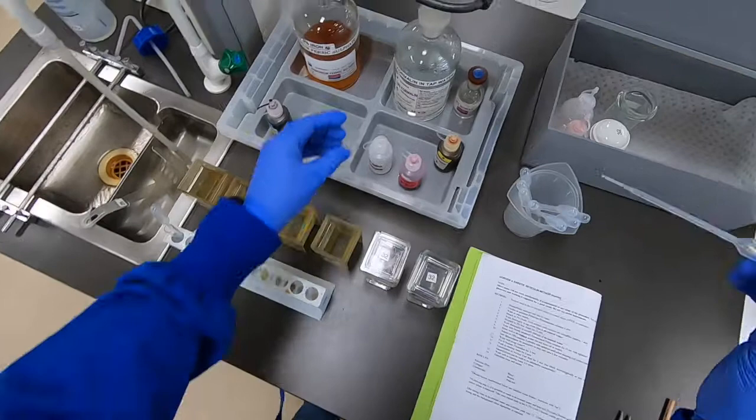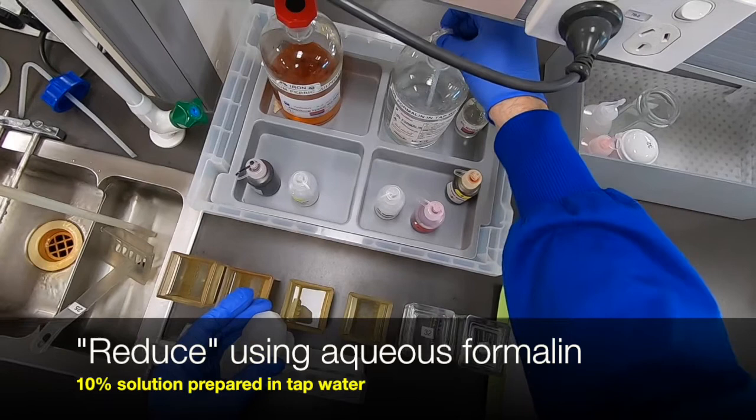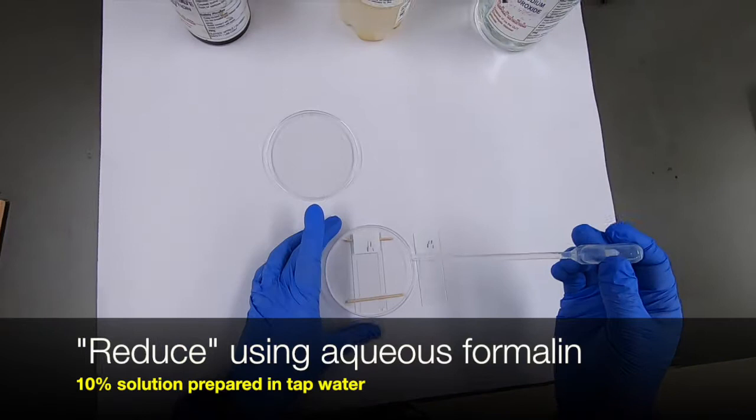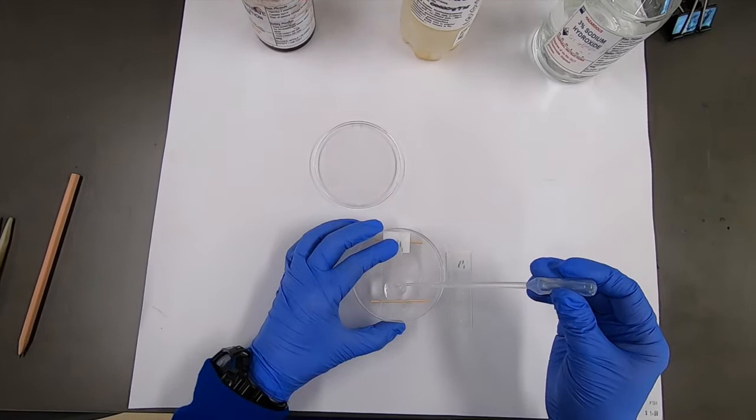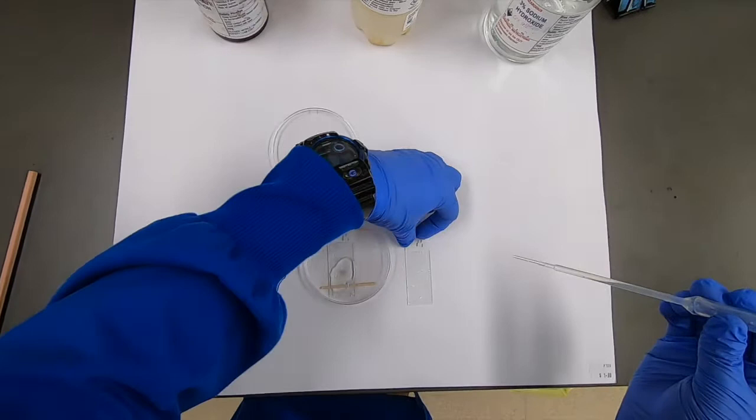I'll just put one of the slides in the dish. So this is the critical step to develop the color by reducing the free silver in the section to the metallic silver precipitate. So you might just be able to see a color change on that one, it's caught up in the shadow a bit.